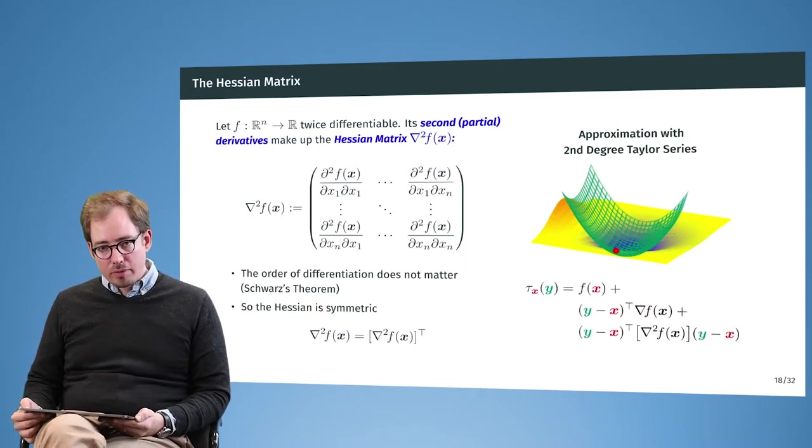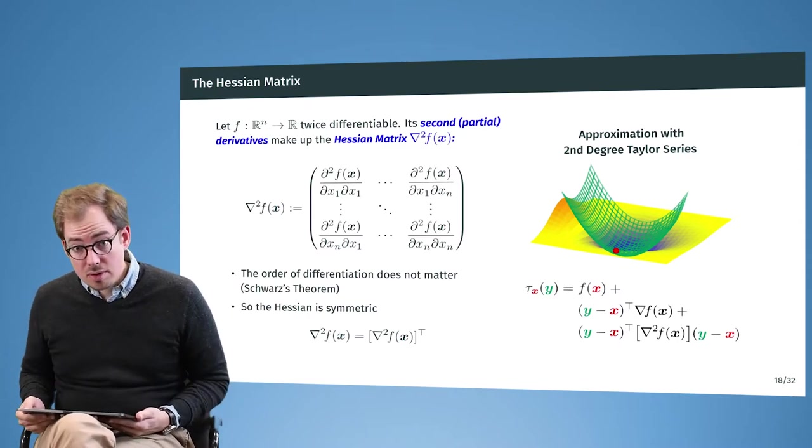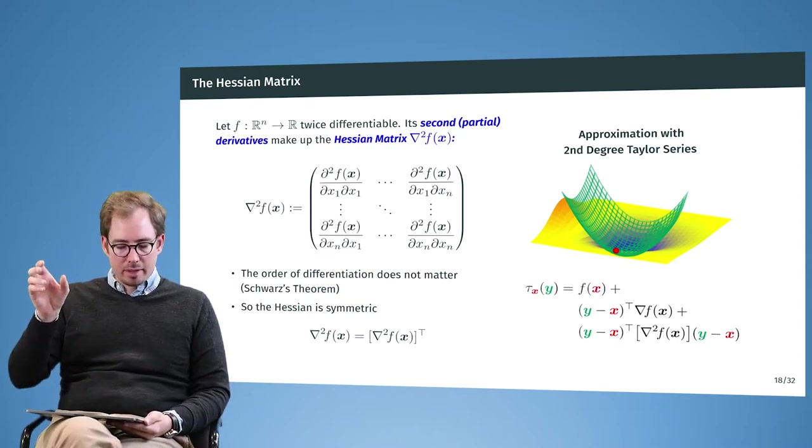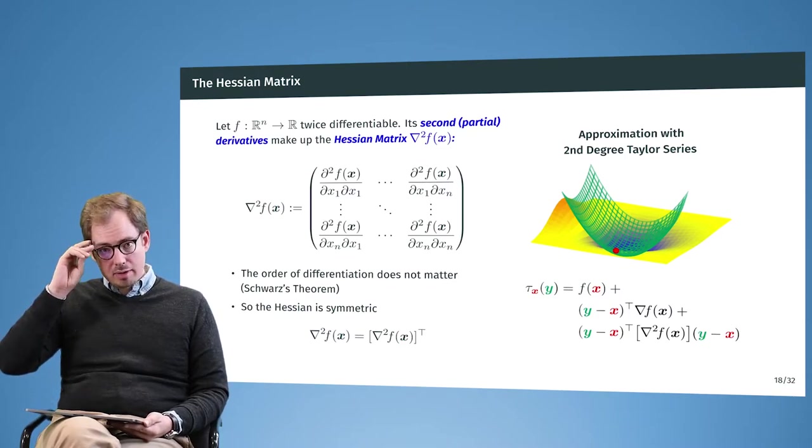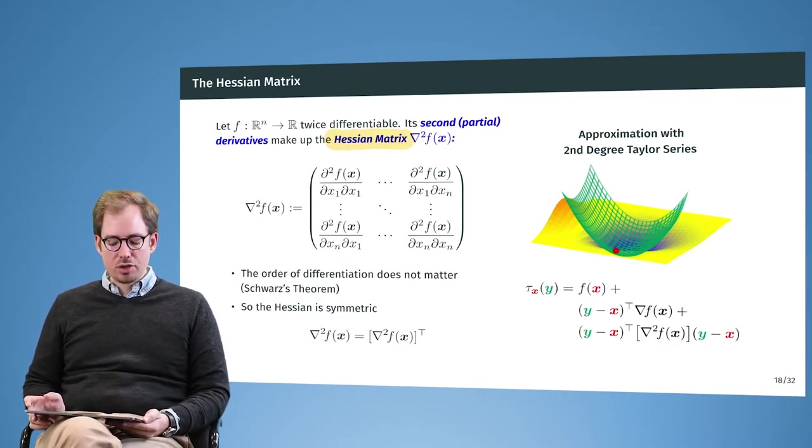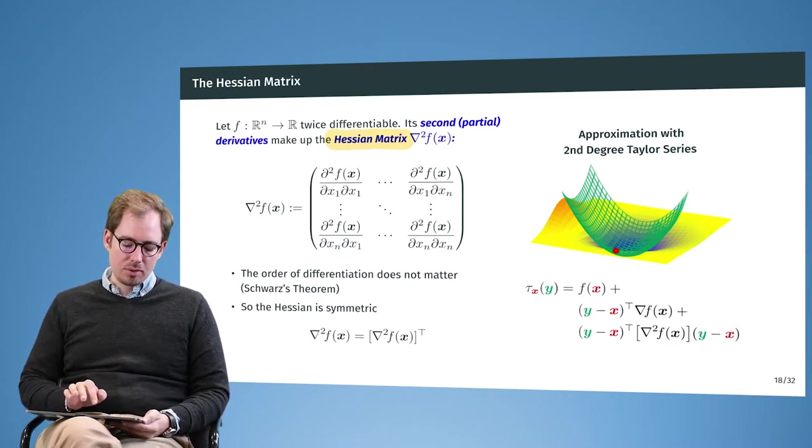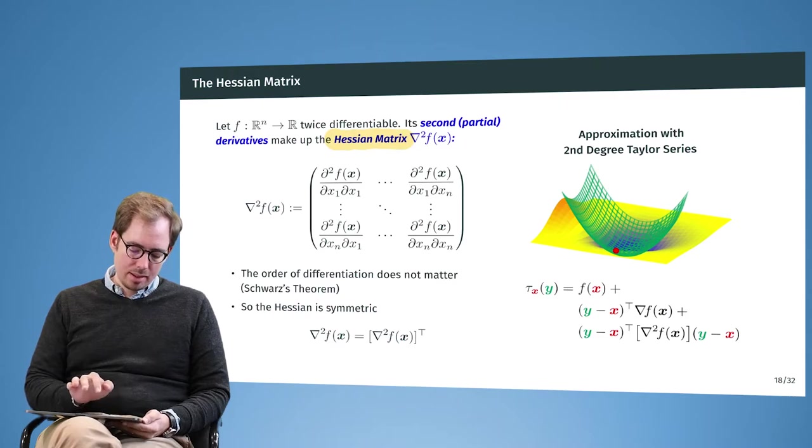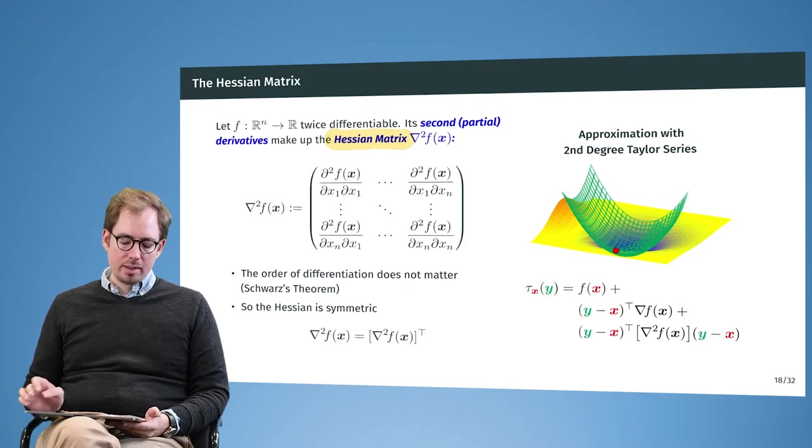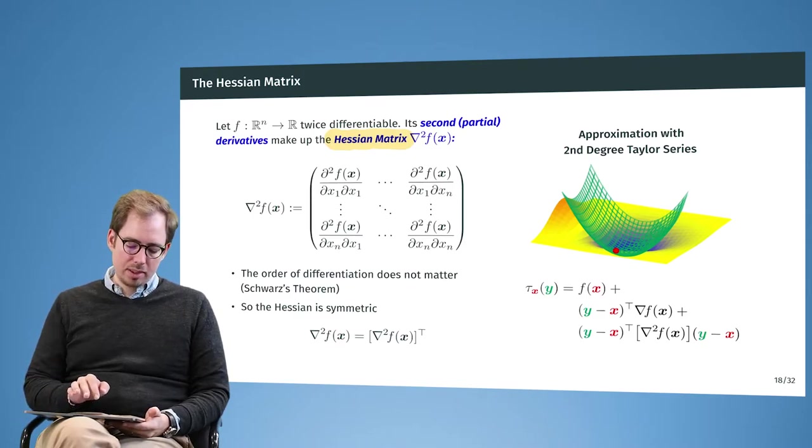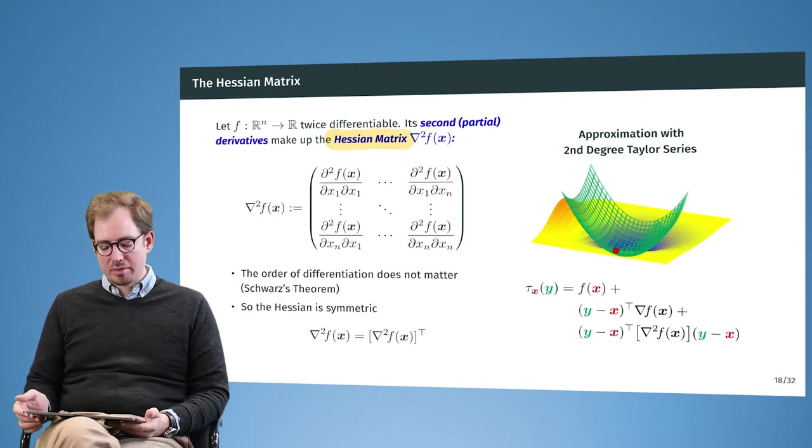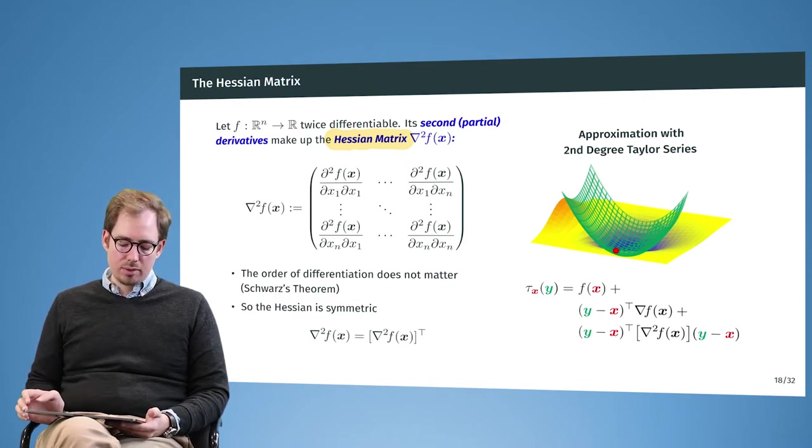Now besides the first derivative, there is also the second derivative. And the first derivative gives us the gradient. And the second derivative gives us the Hessian matrix. And in the Hessian matrix, the first entry here is derived twice for x1. And then here the second entry, it would be derived once for x1 and then for x2, so the second element of the input vector and so on. And this then continues.